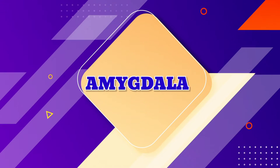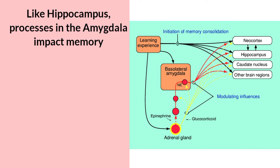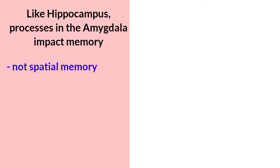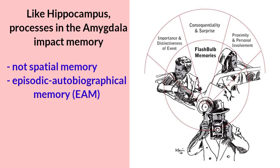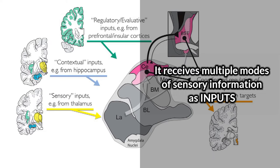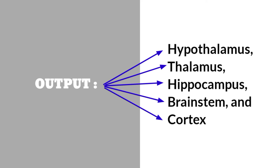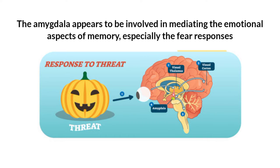The amygdala is a collection of nuclei that lies within the uncus. Like the hippocampus, processes in the amygdala seem to impact memory. However, it is not special memory as in the hippocampus, but the semantic division of episodic autobiographical memory. It receives multiple modes of sensory information as input. The outputs from the amygdala travel through the stria terminalis and the ventral amygdalofugal pathway. Output structures include the hypothalamus, thalamus, hippocampus, brainstem, and cortex. The amygdala appears to be involved in mediating the emotional aspects of memory, especially the fear responses.